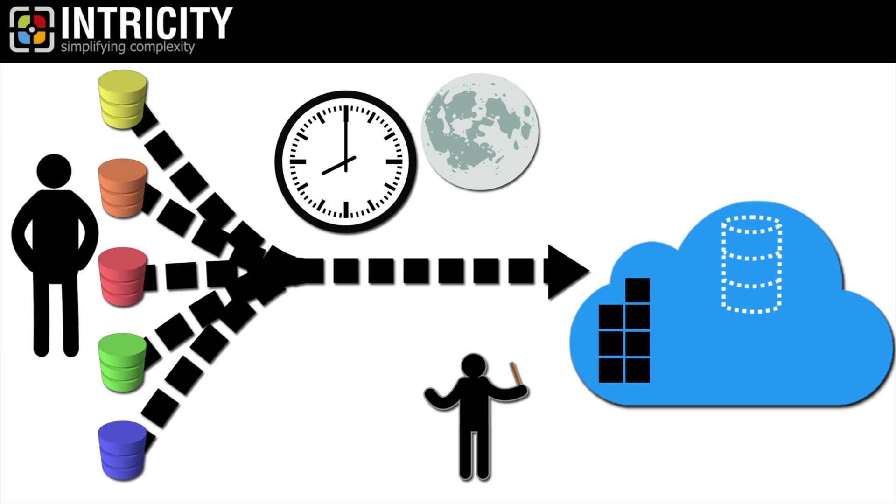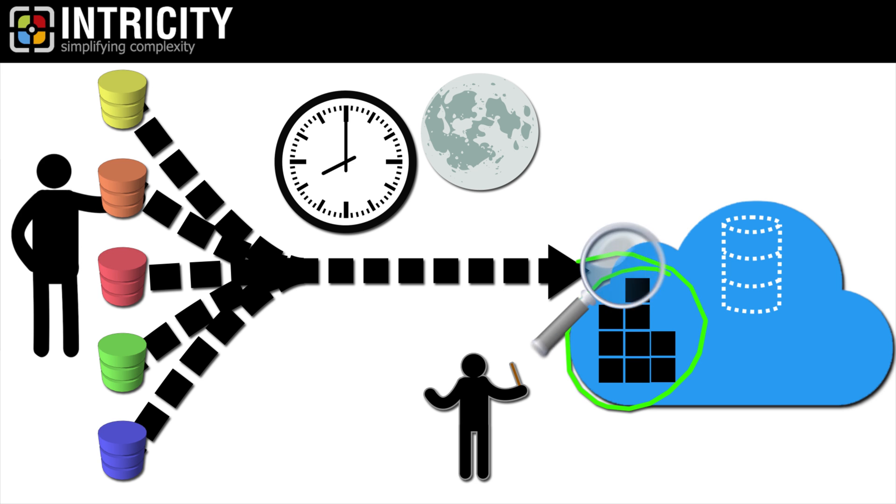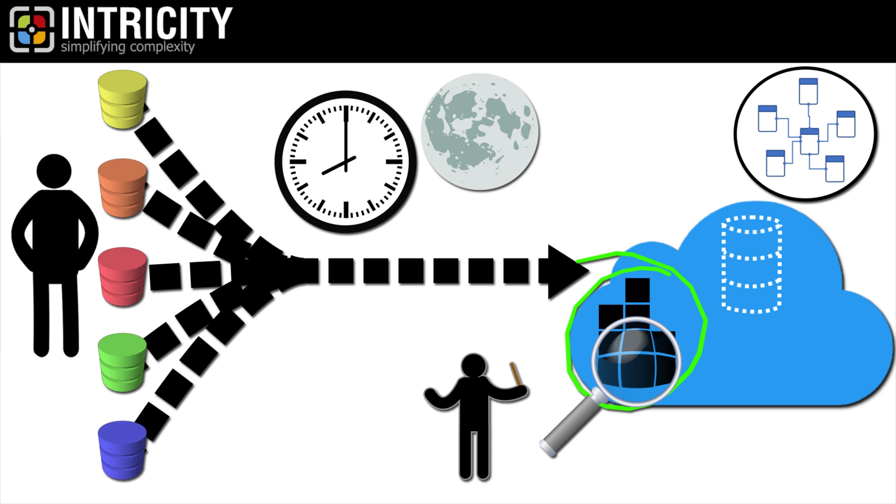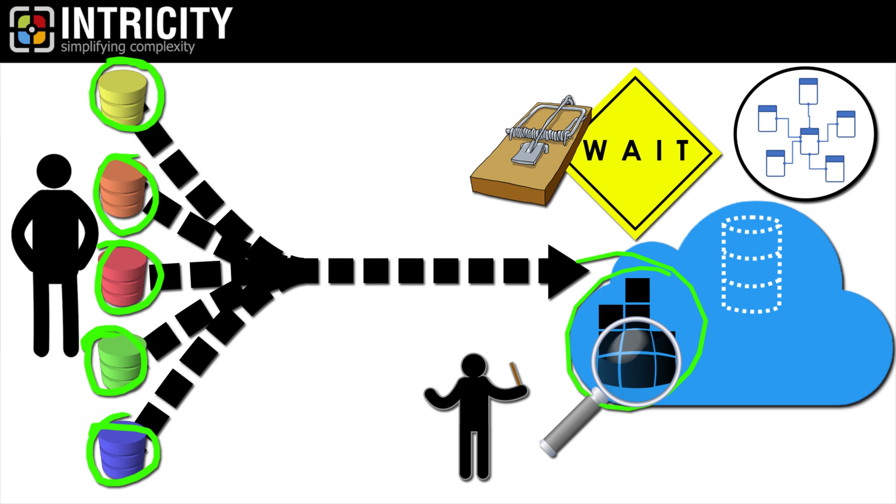However, streaming data live introduces downstream challenges when it comes to reading data. For example, if we're conforming that data, we have to ensure that we are capturing all the relevant data sources to tell the story accurately. This might mean that we need to set triggers for downstream commands that await all the elements to arrive.